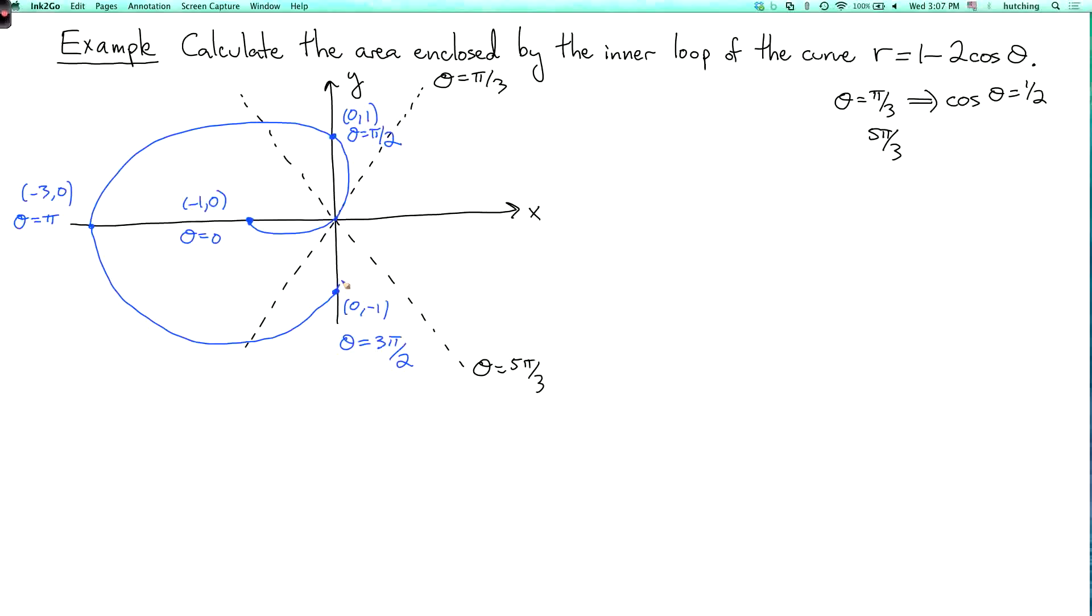r will go back down to 0 when theta is 5 pi over 3. And then we'll go back where we started.